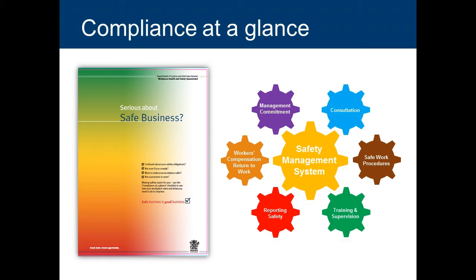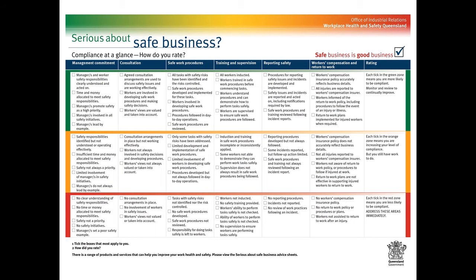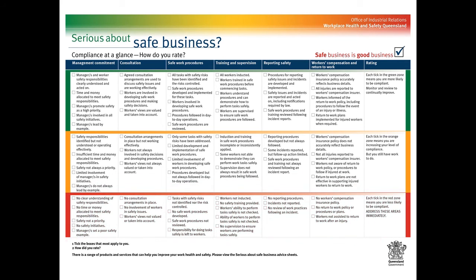It's also important that you establish a process for monitoring, reviewing and improving your health and safety management system to ensure it remains effective. Our Serious About Safe Business Pack also includes a compliance checklist that you can use to assess how your business rates in health and safety. The checklist uses a traffic light system that identifies where you need to make improvements highlighted in red, where there is still some work to do highlighted in orange, and where you're compliant highlighted in green. The checklist then links you to action you can take to improve health and safety.